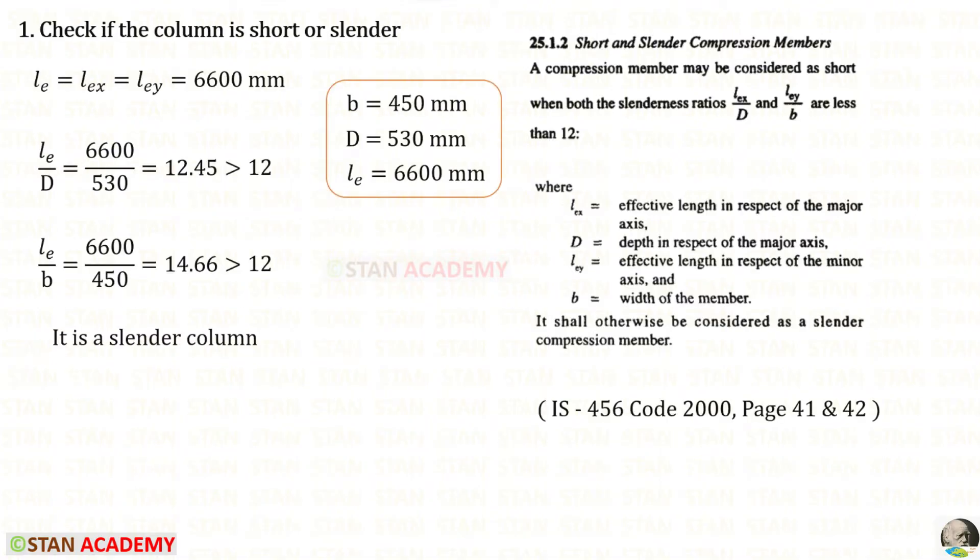The first step is to check if the column is short or slender. From this codebook, we can take these two formulas. In this problem, the effective length in respect of the major axis and minor axis are same which is 6600 mm. B and D are given in the question. For both of these, we are getting a value greater than 12. So, it is a slender column.